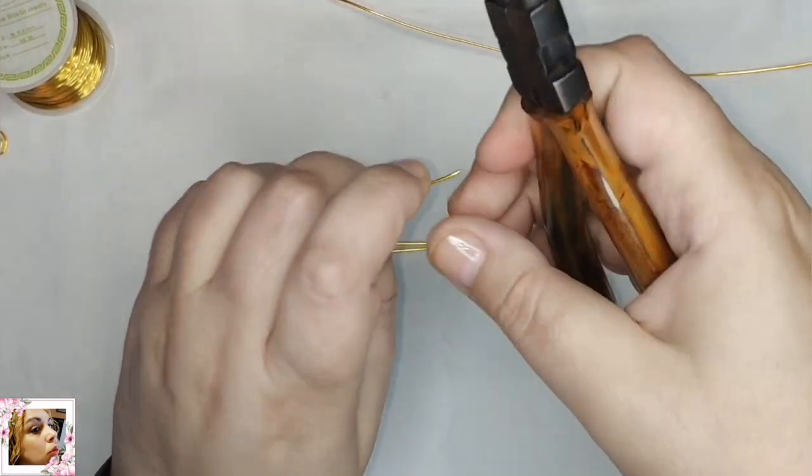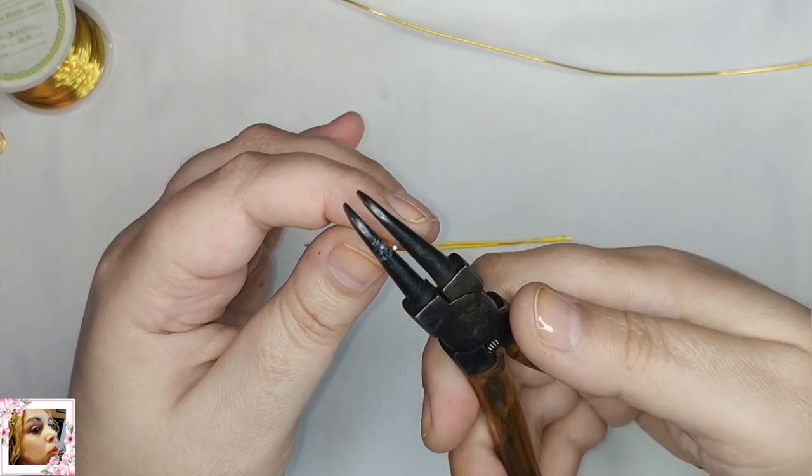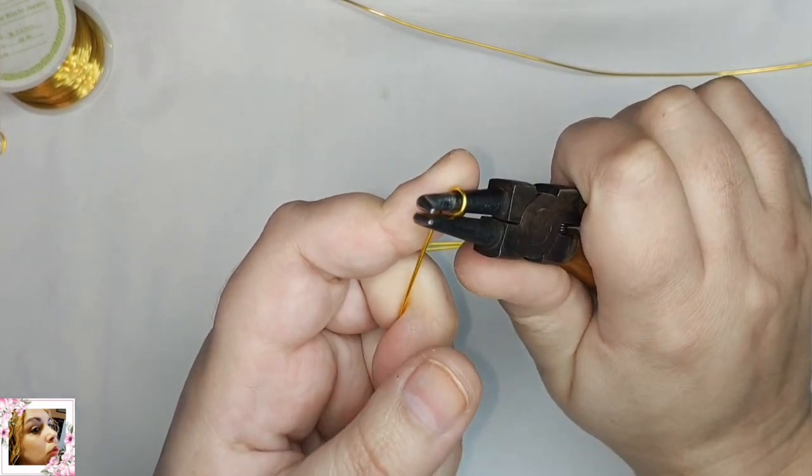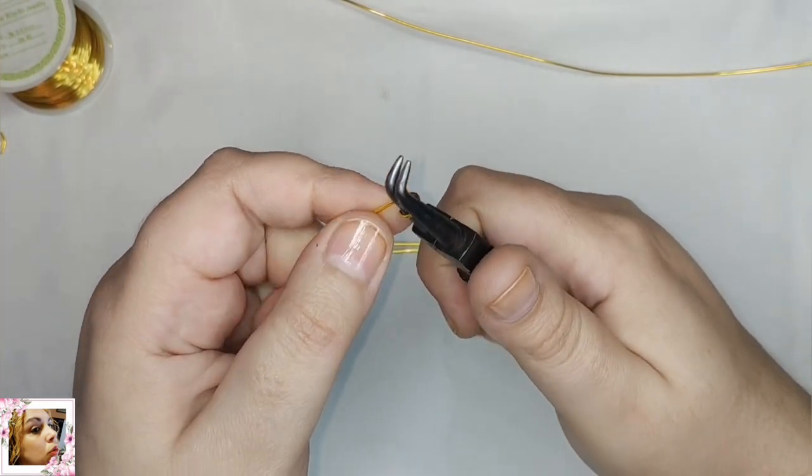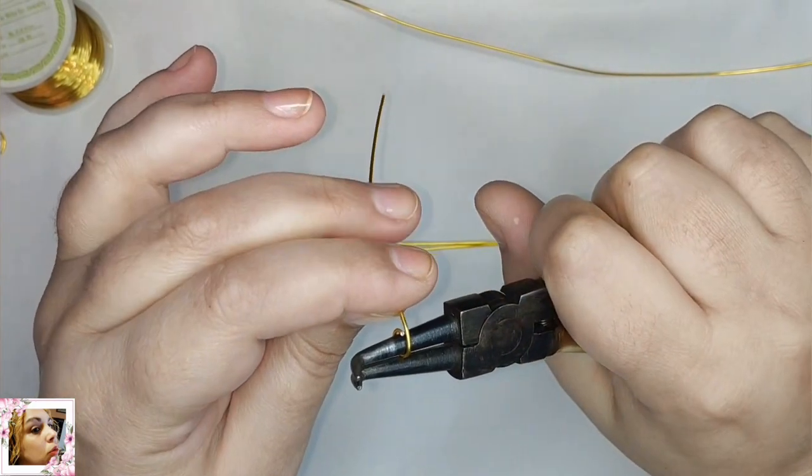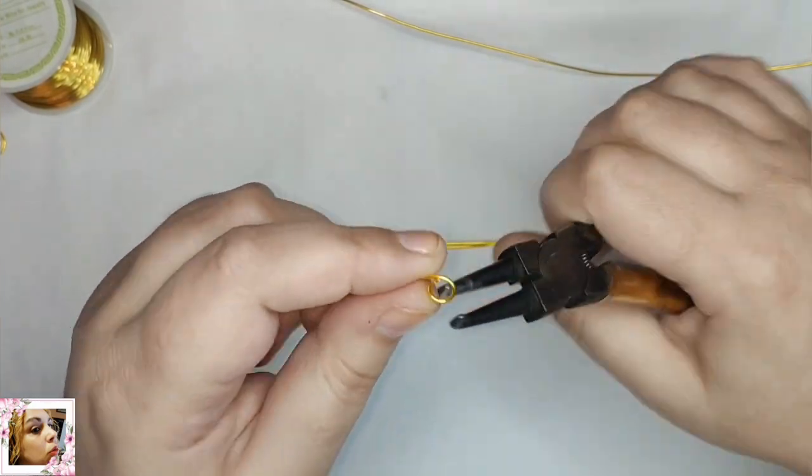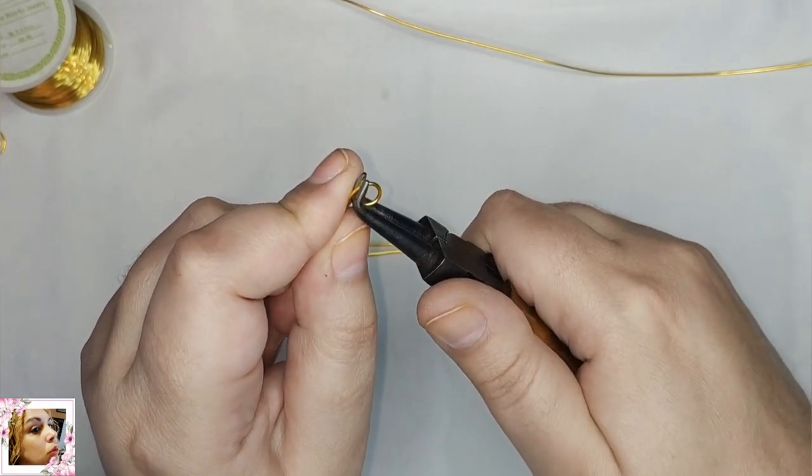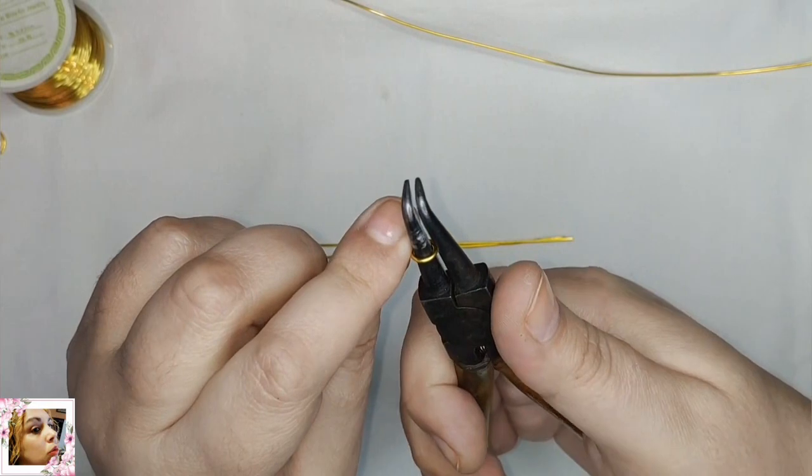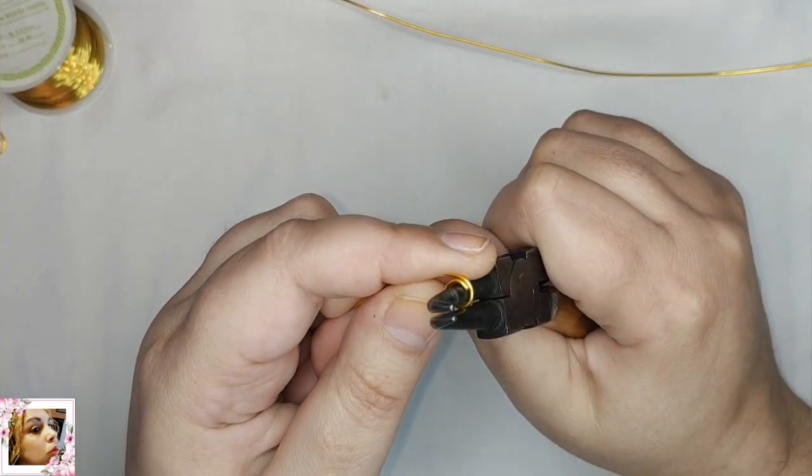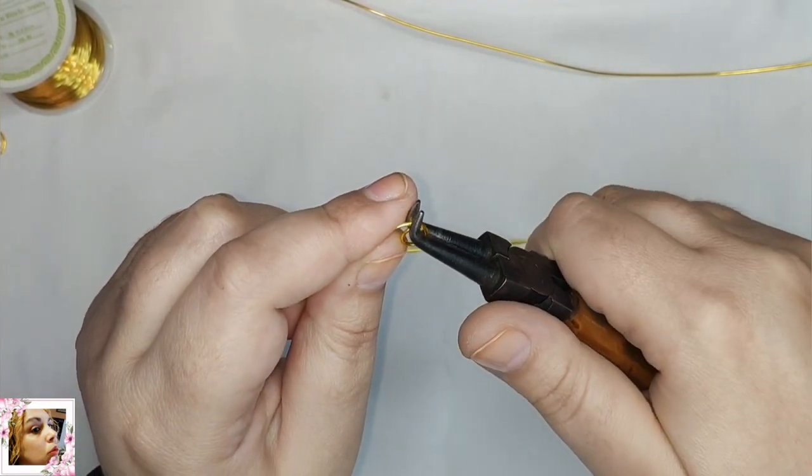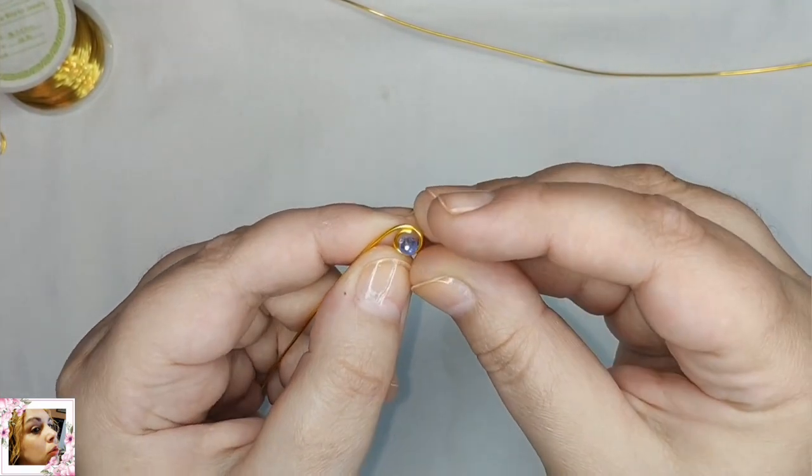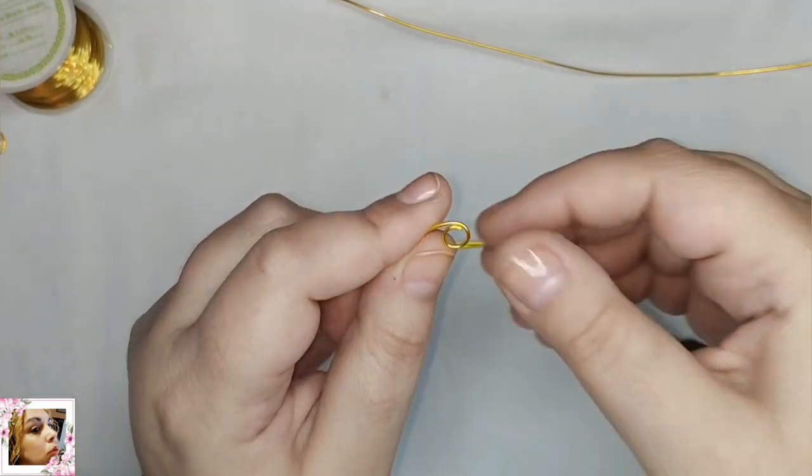Lo siguiente que vamos a hacer es usar los tramos de 11 cm. Empezando por un círculo vamos a hacer una espiral abierta. Primero hago el círculo y doblo un poquito más allá del corte. Ese círculo tiene que caber el avalorio de 4 mm.